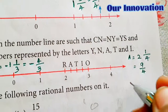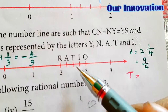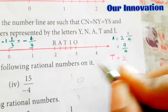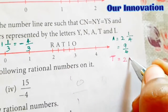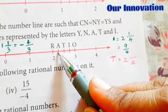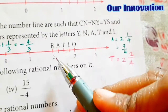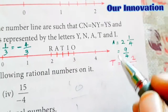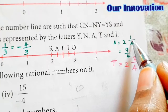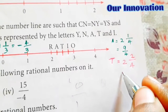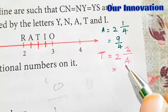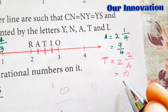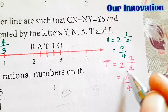Now find T. T is also between 2 and 3. Whole number 2, denominator 4. T is at the 2nd position. Converting to improper fraction: 4 twos are 8, plus 2 is 10. So T equals 10 by 4.